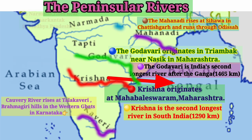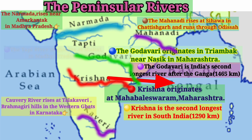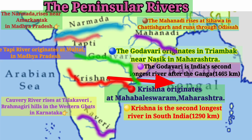River Narmada takes birth at Amarkantak in Madhya Pradesh, while River Tapi takes birth at Multai in Madhya Pradesh. Both Narmada and Tapi flow in the direction east to west — opposite to the previous rivers — and finally join the Arabian Sea.